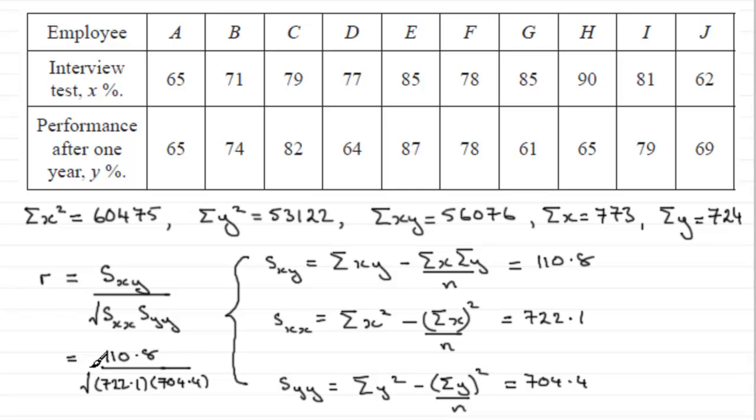Okay, now, if you work that out, you should realize that R always is a value between minus one and one inclusive. So, expect to get a result something like that, because if you don't, you know you've made an error.